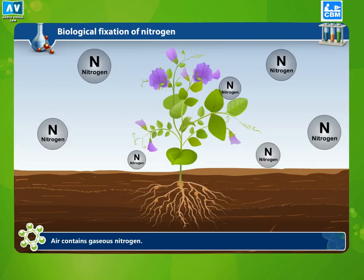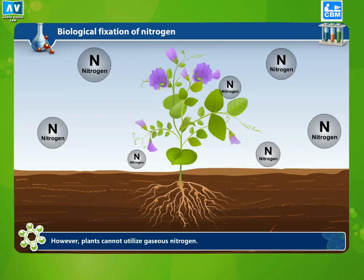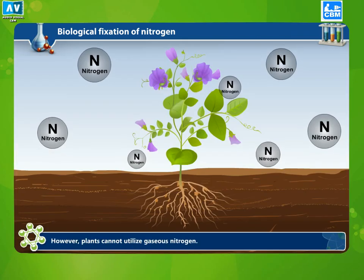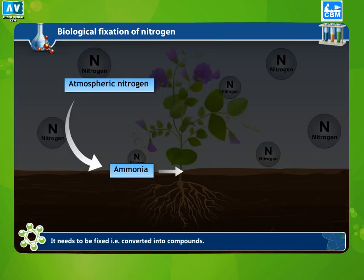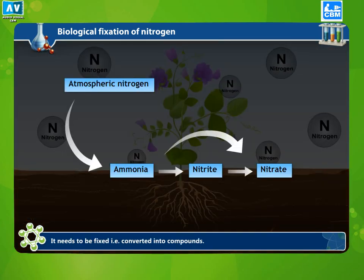Air contains gaseous nitrogen. However, plants cannot utilize gaseous nitrogen. It needs to be fixed, that is, converted into compounds.